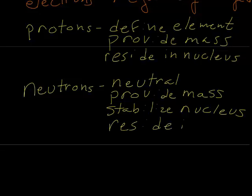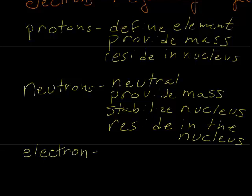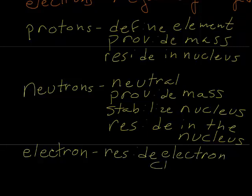The last particle that is part of the atom is the electron. The electron does not reside in the nucleus. It resides in the electron cloud which surrounds the nucleus. It is negatively charged, and the number of electrons determine the reactivity or the chemistry of the atom.